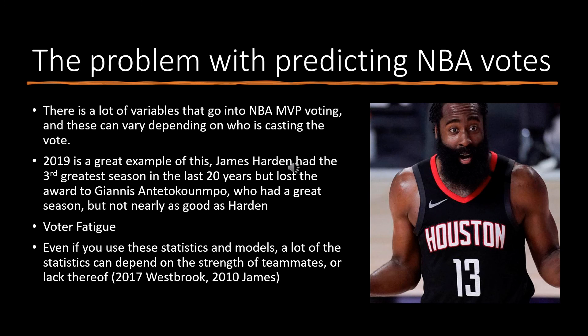The problem with predicting NBA votes is that there are a lot of variables that go into MVP voting, and these can vary depending on who is casting the vote. As we can see with these metrics, we can determine who is valuable, but that doesn't always mean they will receive those votes. James Harden in 2019 had the third greatest season in the last 20 years, but lost the award to Giannis Antetokounmpo. This is partially due to voter fatigue — Harden won the year before, and voters don't want to vote for a player two years in a row.